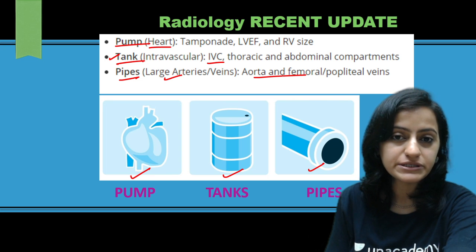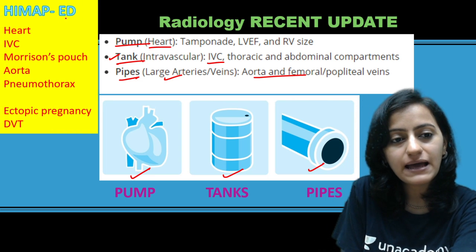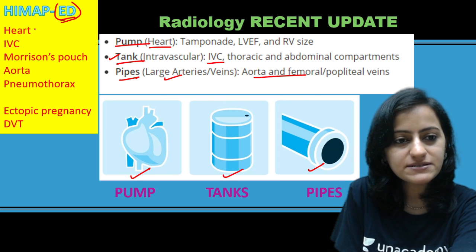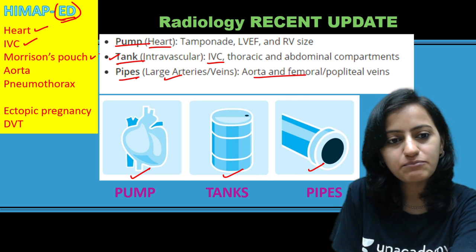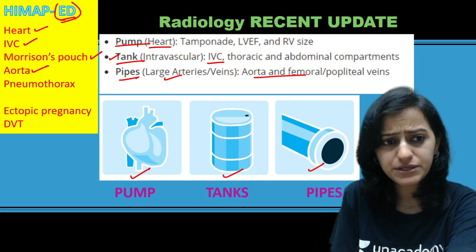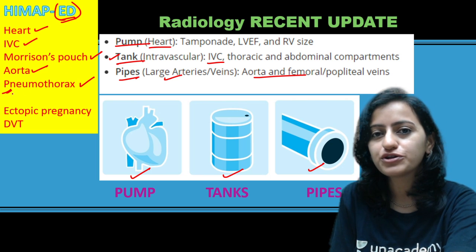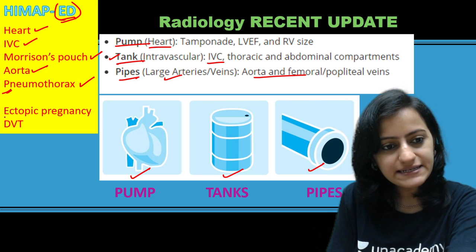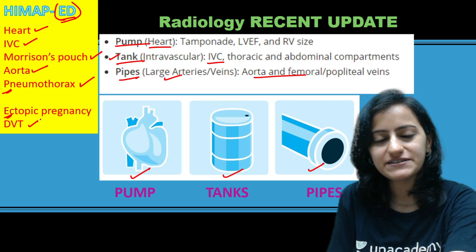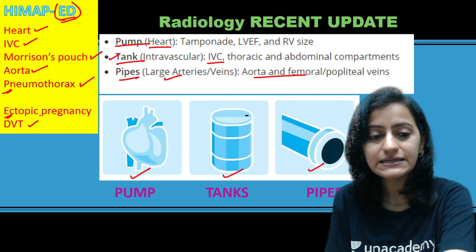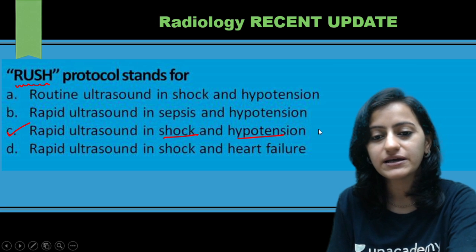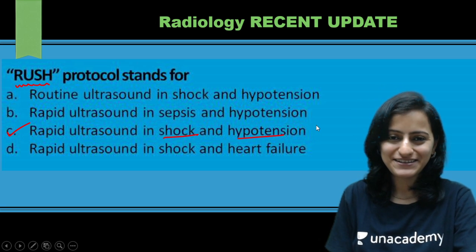The mnemonic to remember what is included in the RUSH protocol is HIGH MAP ED — ED has been added recently. HIGH MAP stands for: H for Heart, I for IVC, G for Morrison's pouch (as in FAST ultrasound), H for... A for Aorta, P for Pneumothorax. ED stands for Ectopic pregnancy and DVT — a ruptured ectopic patient can present with shock. So remember: HIGH MAP ED, and RUSH = Rapid Ultrasound in Shock and Hypotension.